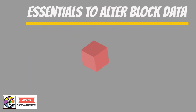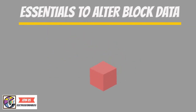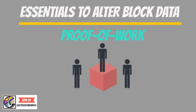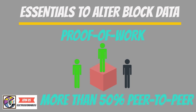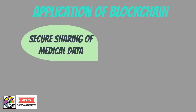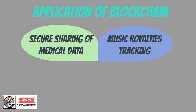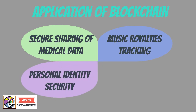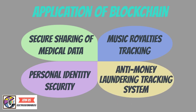In order to change a block in a blockchain, there is a need for proof of work and control of 50% of the peer-to-peer network, which is almost impossible. Blockchain technology is being used in various areas where security is of prime concern, such as secure sharing of medical data, tracking of music royalties, security of personal identity, and anti-money laundering systems. That's all about blockchain.